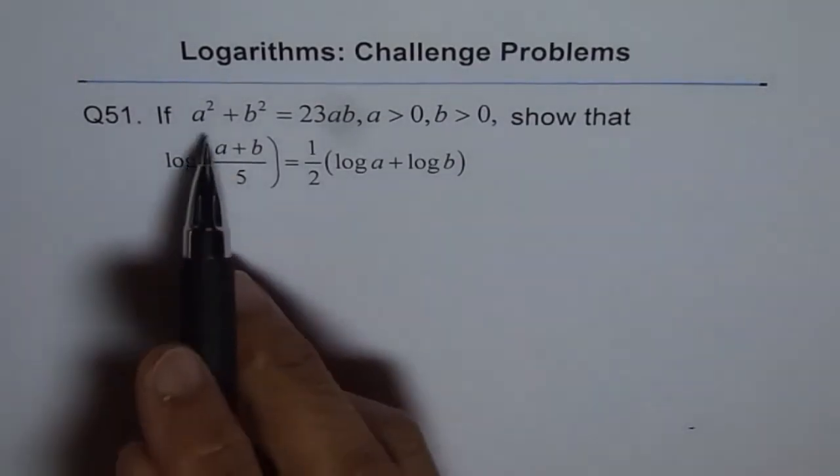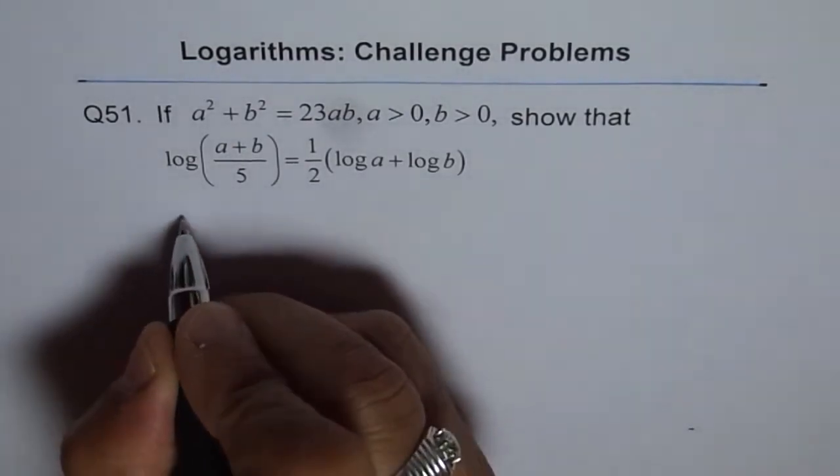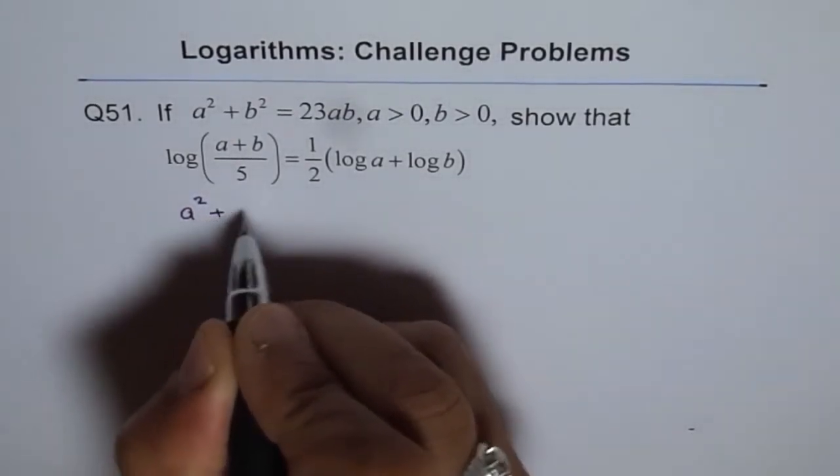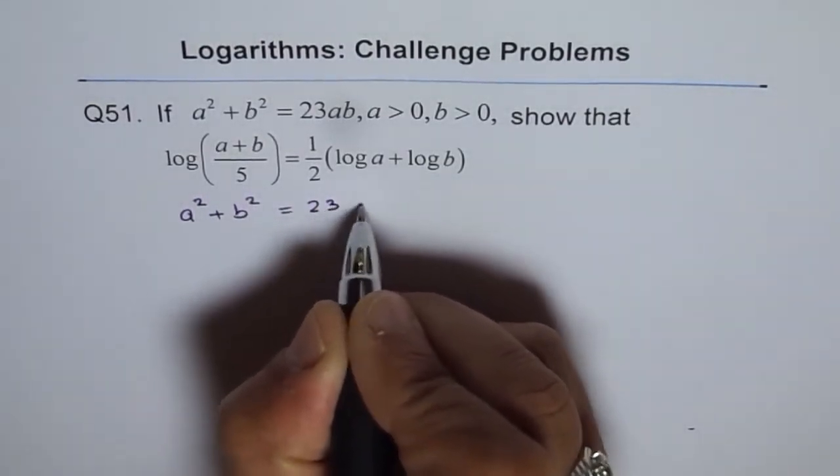Now, we need to rearrange this equation to get that. We are given a square plus b square equals 23ab.